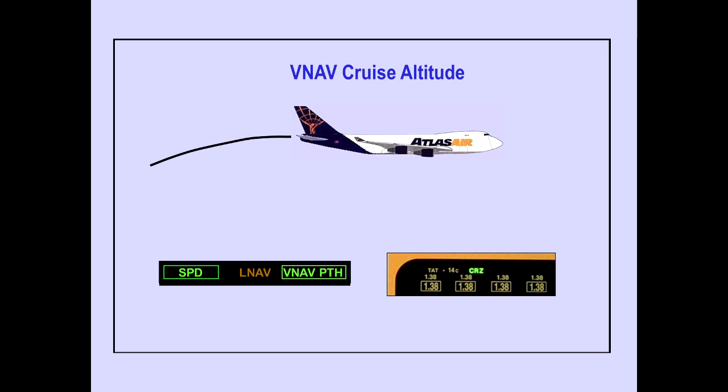When the airplane reaches VNAV cruise altitude, the autothrottle maintains speed, the autopilot pitch maintains the VNAV path, and the cruise thrust reference is displayed on EICAS.